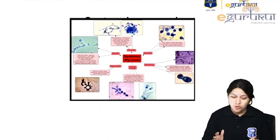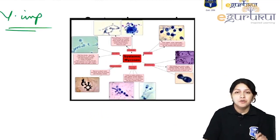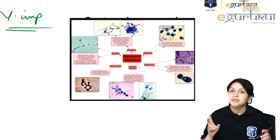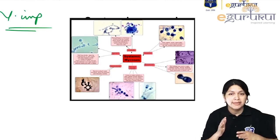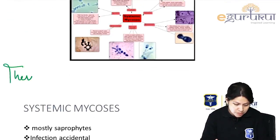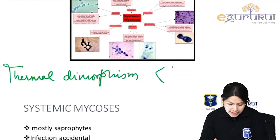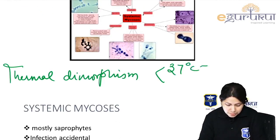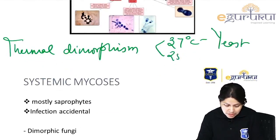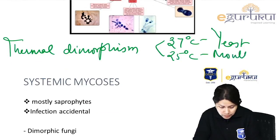The next very important group is dimorphic fungi. The name itself implies they exist in two forms: a yeast form and a mold form, based on differences in temperature — they show thermal dimorphism. At 37°C or body temperature they exist in the yeast form, and at 25°C or room temperature these exist in the mold form.